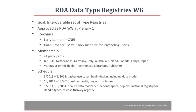RDA actually was going to start in DATF. Then RDA came along. Let's start a working group as an experiment — plus we got money from Sloan and were working on it already. Our goal is an interoperable set of type registries. It was approved as an RDA working group at Plenary One — which I now regret, because it means I'm supposed to be done soon. The co-chairs are me and Dan Broder at the Max Planck Institute for Psycholinguistics in Nijmegen, Holland, who I've worked with for a while. Last time I looked there were 44 members of the working group — pretty widespread — science people, librarians, publishers. I'm getting a lot more bang for my Sloan buck than I would be otherwise. That's why I took it there.